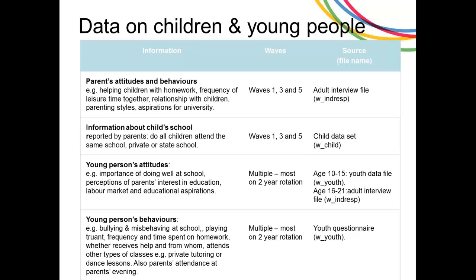As we'll see in a moment, there is much more information on schools from other sources. For young people, we have attitudes to education covering both the youth panel aged 10 to 15, and young adults aged 16 to 21 — many of whom will still be in education. Variables include the importance of doing well at school, perceptions of parents' interest in their education, and labor market and educational aspirations. Most of these modules run on a two-year rotation across multiple waves.